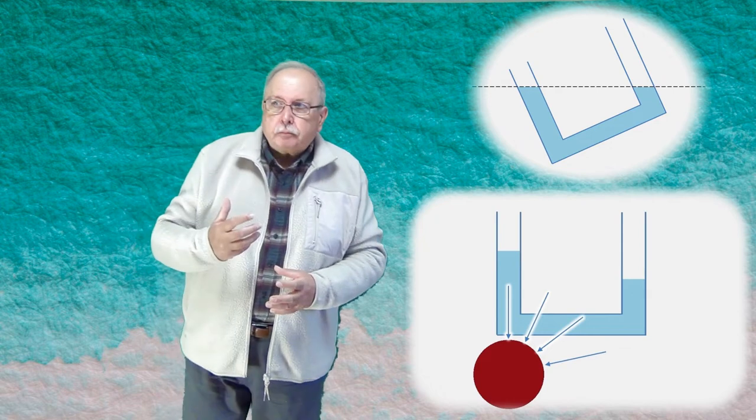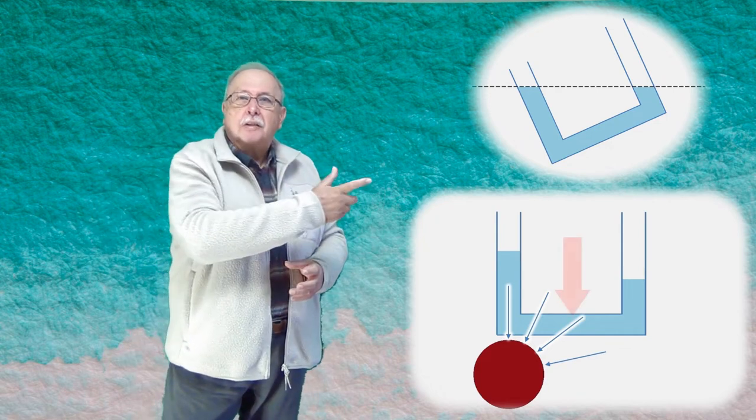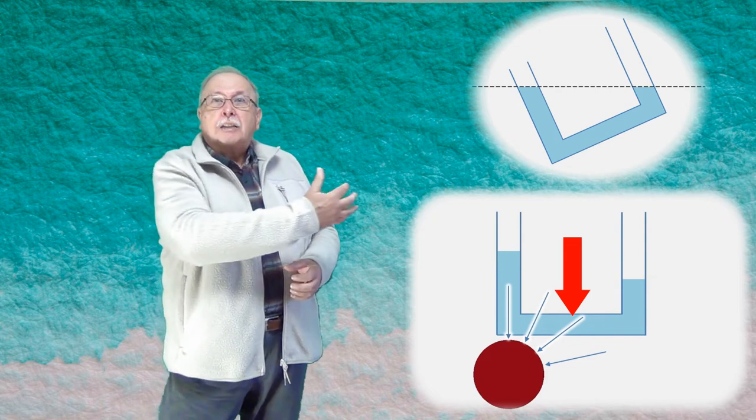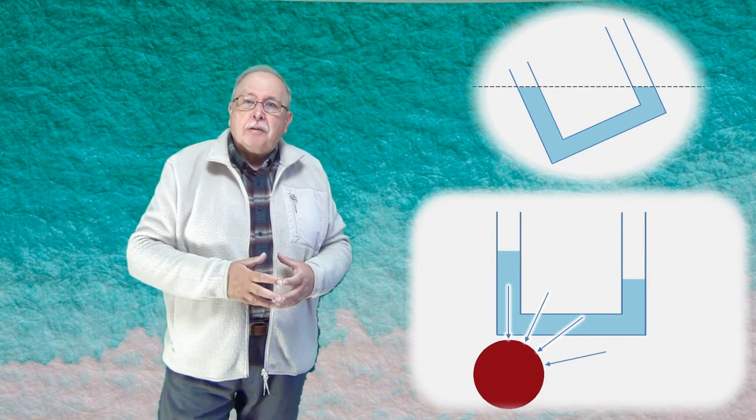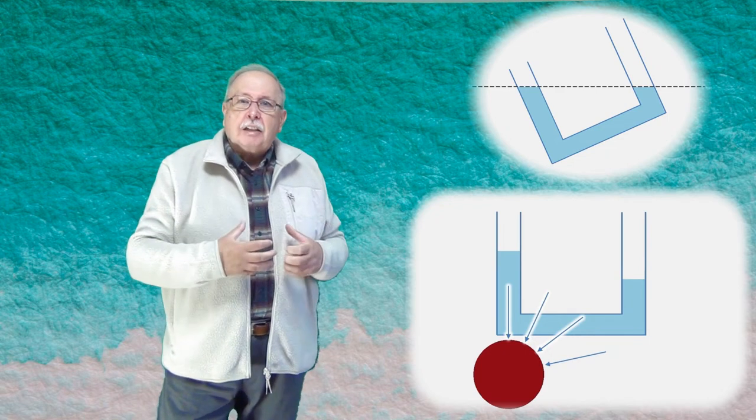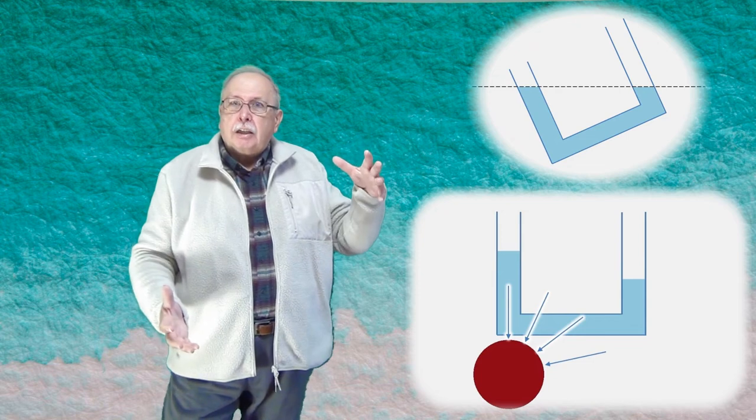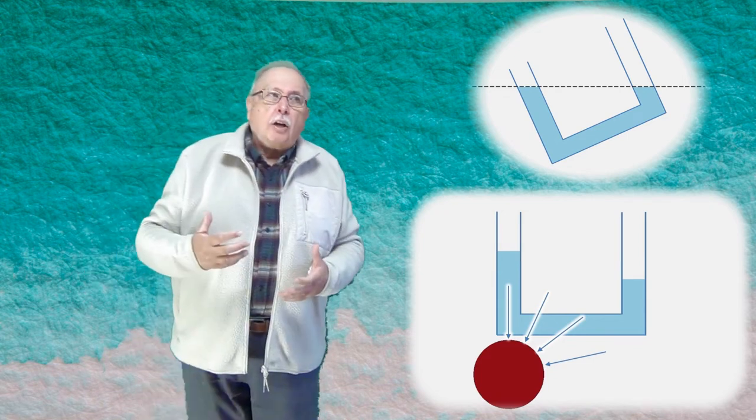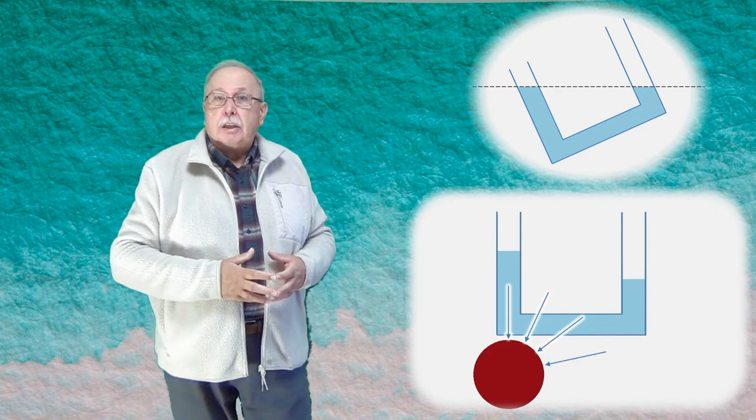Dar dacă gândim așa, uităm că există apă și în porțiunea orizontală a sistemului de vase comunicante. Și apa respectivă va fi și ea atrasă de sferă. Și din cauza acestei atracții, presiunea crește în partea din stânga, tot așa cum crește și în cazul vaselor înclinate. Și această creștere a presiunii face să apară o coloană de apă mai lungă în vasul din stânga decât în vasul din dreapta.